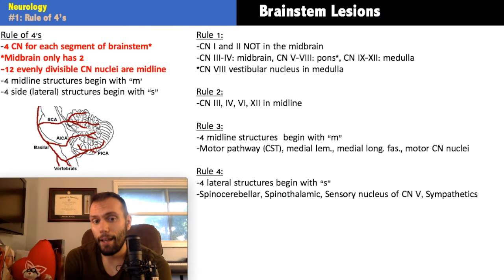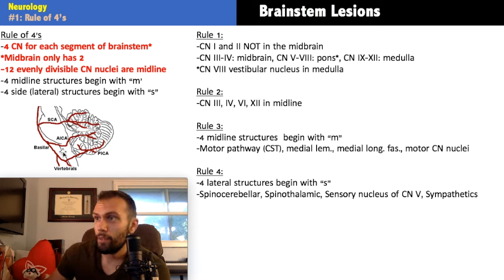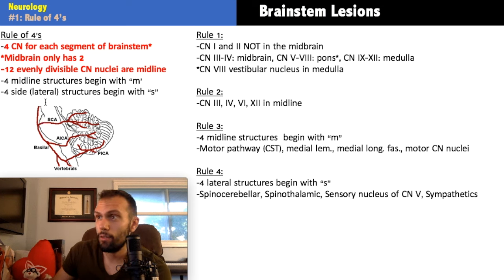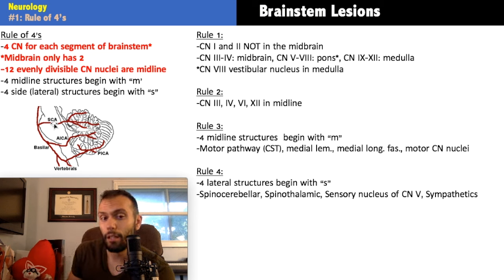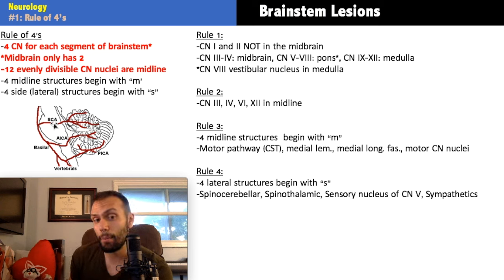Essentially you have four cranial nerves at each segment of the brainstem. When talking about the brainstem, you have your medulla, your pons, and your midbrain, going from inferior to superior. There are three segments, and when we talk about lesions in the midbrain, we're asking whether the lesion is going to be midline or lateral. If you know the segment and whether it's midline or lateral, you just have to know which artery is associated.